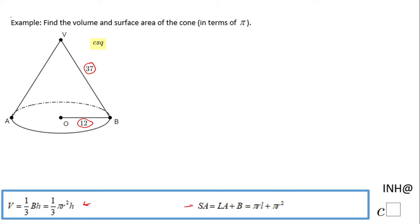These are the two formulas we're going to use and I'm going to start with the surface area since we know this slant height. So the surface area for this cone will be πrℓ (where ℓ is the slant height) plus πr².